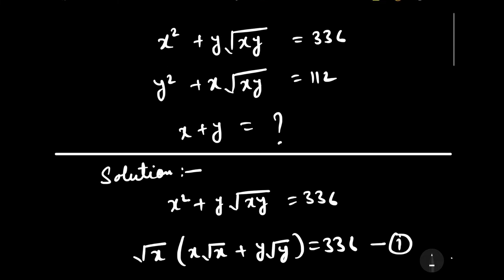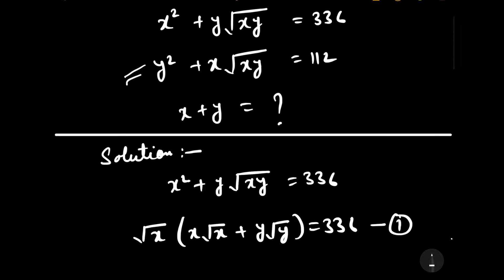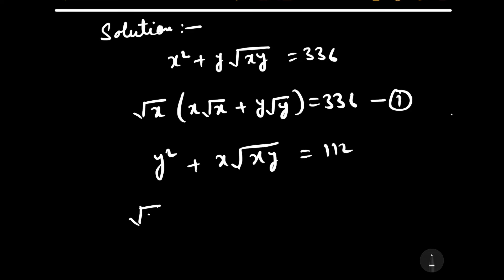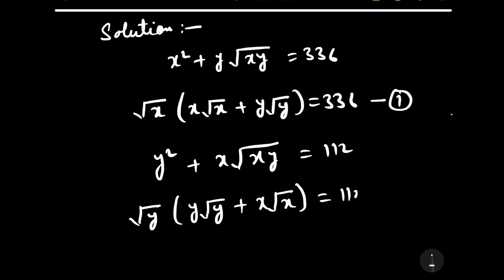Now the second equation is y squared plus x times the square root of xy equals 112. Taking the common factor square root of y, this becomes square root of y times (y times square root of y plus x times square root of x) equals 112. Let us consider this as the second equation.